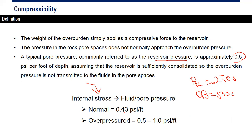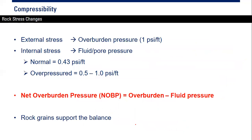If you have an over-pressured reservoir, the reservoir pressure or pore pressure is 0.5 to 1 psi per foot. To reiterate: external stress from overburden pressure has a gradient of one psi per foot, while internal stress from fluid or pore pressure has a normal gradient of 0.43 psi per foot, and an over-pressure gradient of 0.5 to 1 psi per foot.